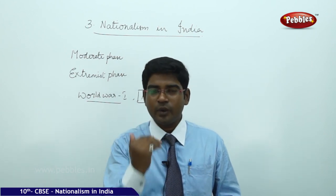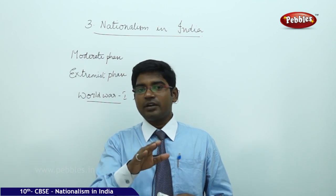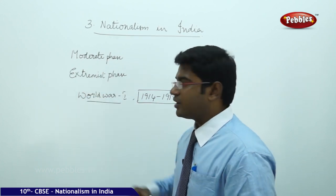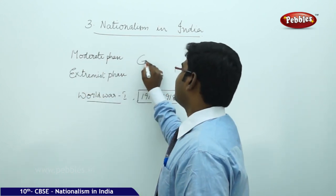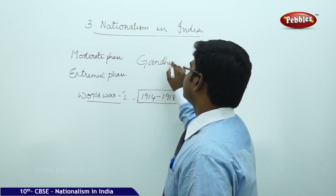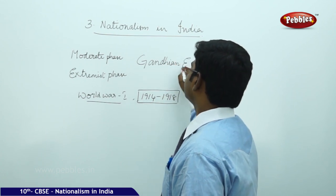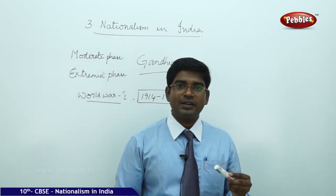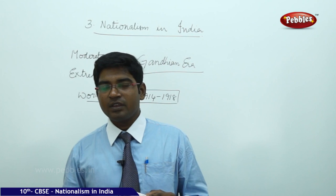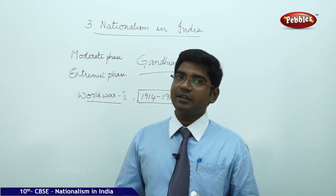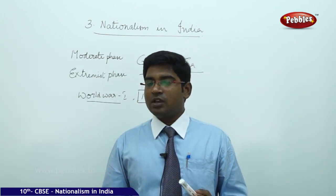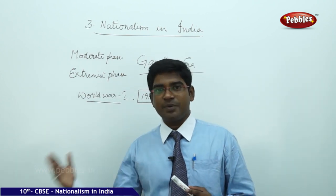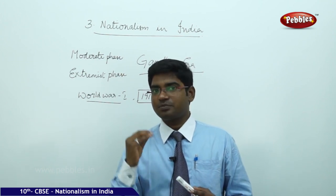When Gandhiji entered politics, the Congress phase changed from the moderate phase and extremist phase to the Gandhian era. From Gandhi's entry into Congress and his taking over leadership, we have the Gandhian era continuing until India got its independence in 1947. The most intense phase of India's struggle for independence was during the Gandhian era in Congress.